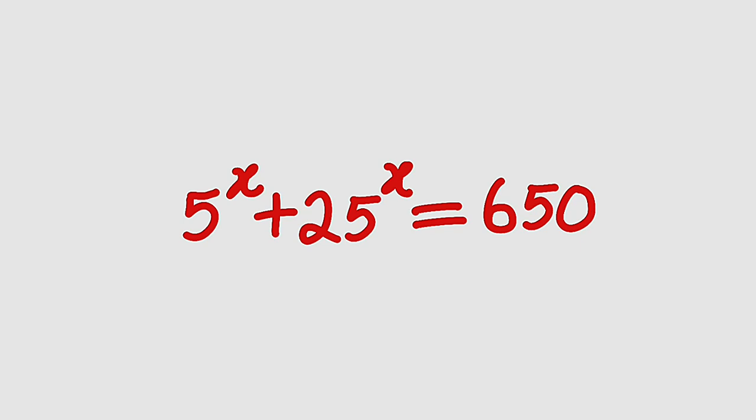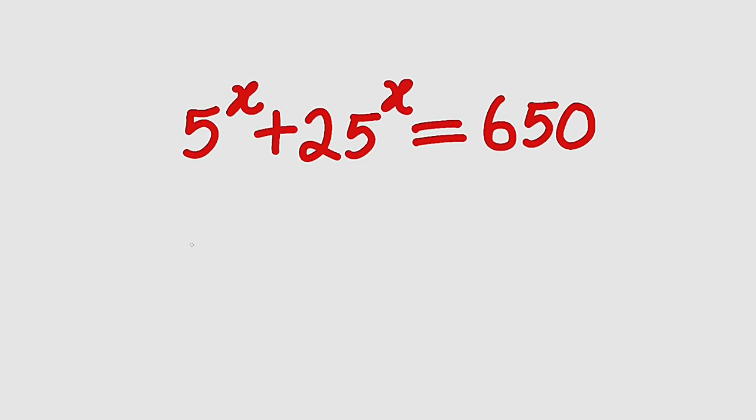Alright, let's get started. 5 to the power of x can remain 5 to the power of x. But you know 25 is the same thing as 5 squared, so we can write this as 5 to the power of x all squared.